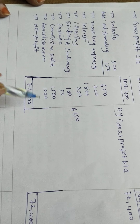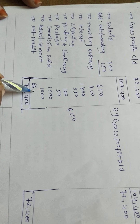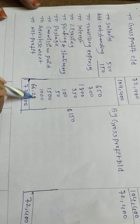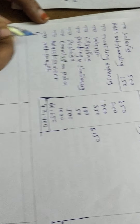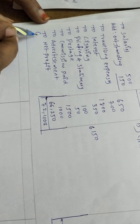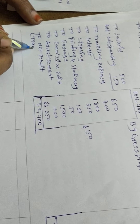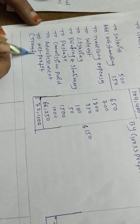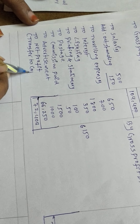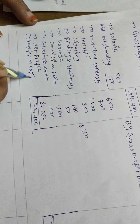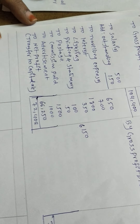Income is more than expenditure — the balance is called net profit. We deduct 6,150 from 72,400. The net profit is 66,250. This net profit is transferred to the capital account.